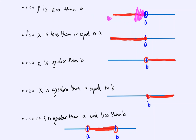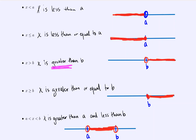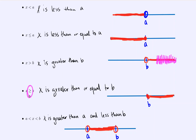If I change it to allow equality with a, the only difference is I shade a with a solid circle, but still include those values less than a. For x greater than b, I use an open circle on b, splitting the line into two sections; since I want to be greater, I shade to the right of b. For greater than or equal to b, the only difference is a filled-in circle, still shading to the right.